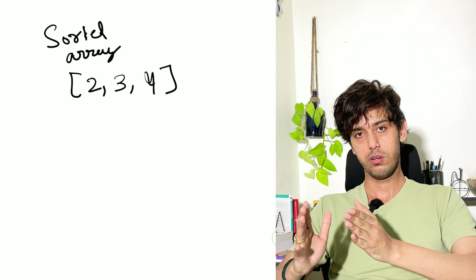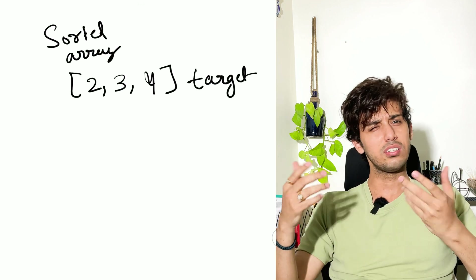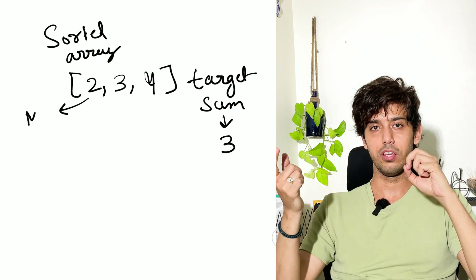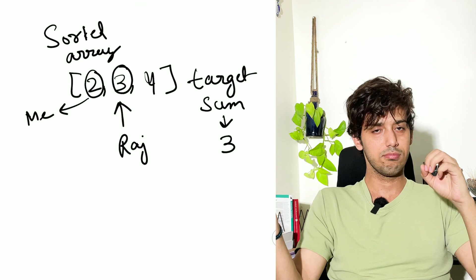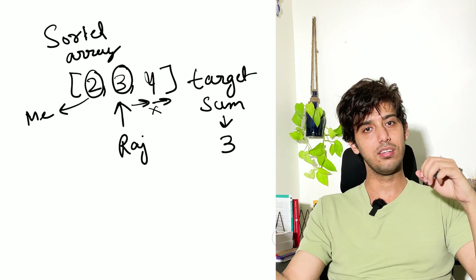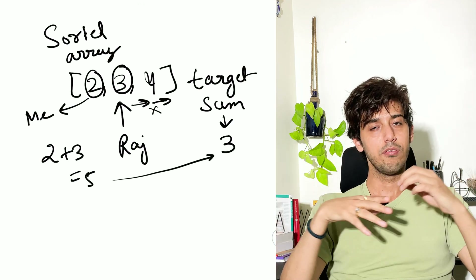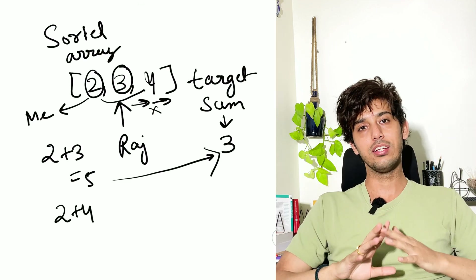There is another variation of the same problem where the input array is already sorted. Let's say the array is [2, 3, 4] and you need to find two elements that sum to 3. I hold the first element, 2, and tell Raj to go find 1 (since 2 plus 1 equals 3). He searches but sees the second element is 3 — too large. Since the array is sorted, he doesn't need to keep running because he'll only find larger sums. This is why O(n²) is a bad solution for a sorted array.